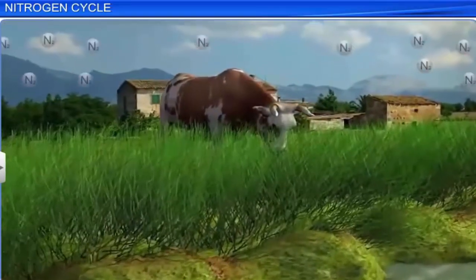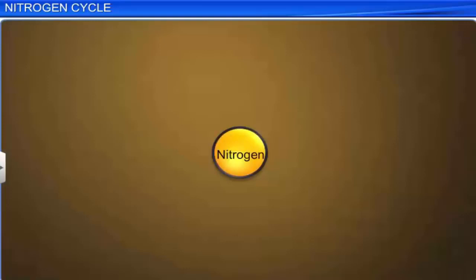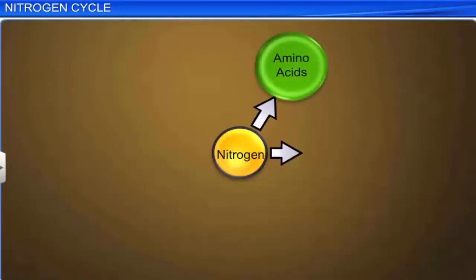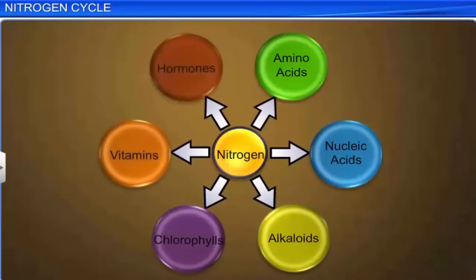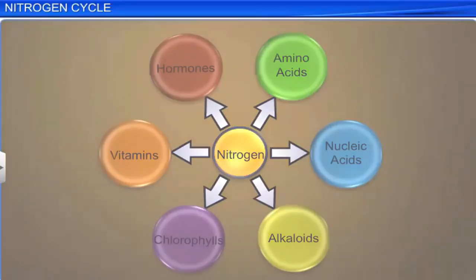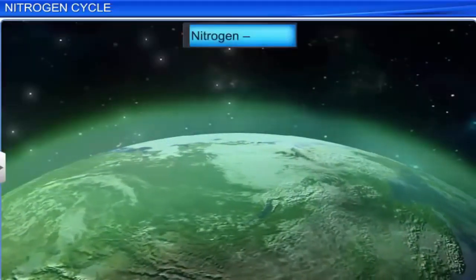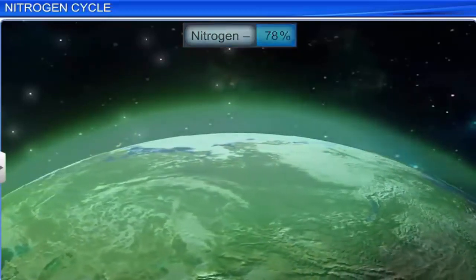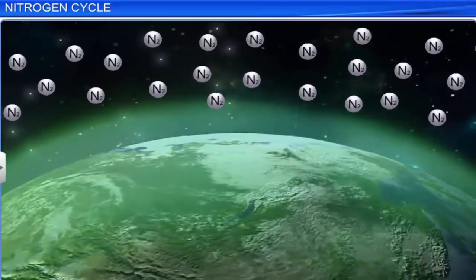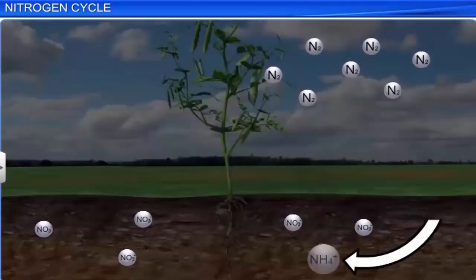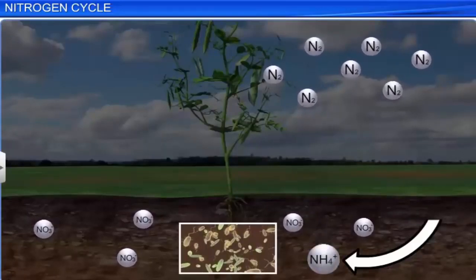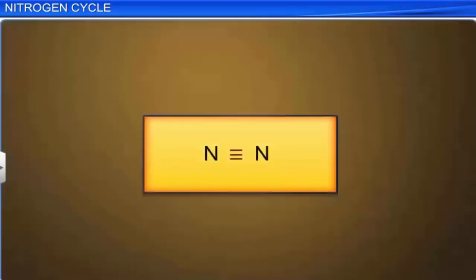Nitrogen is an important element for living organisms as it is an essential constituent of amino acids, nucleic acids, alkaloids, chlorophylls, vitamins, and hormones. It is one of the major constituents in the atmosphere and comprises 78% of all gases by volume. However, atmospheric nitrogen cannot be used by plants. Only a small amount of nitrogen is present in soil, and plants compete with microorganisms for it. Atmospheric nitrogen is in the form of elemental nitrogen, which requires a large amount of energy to break it into forms suitable for living organisms to absorb.